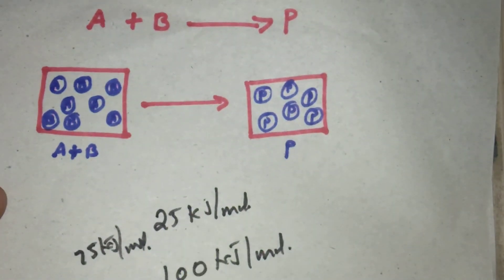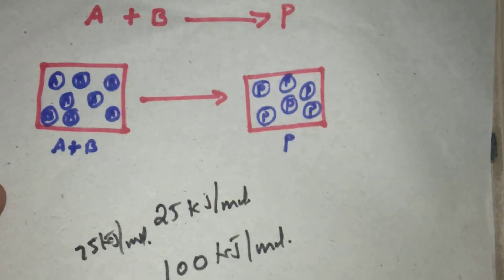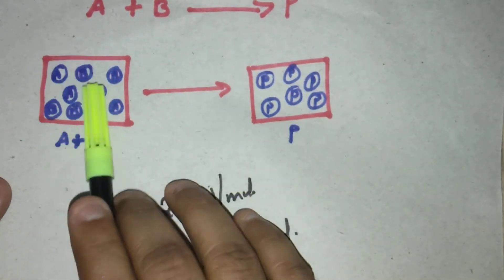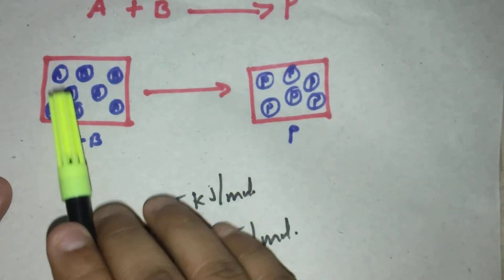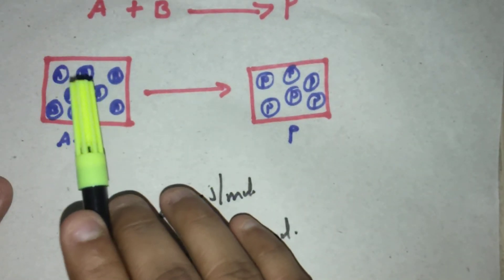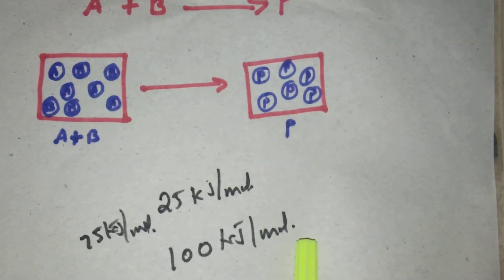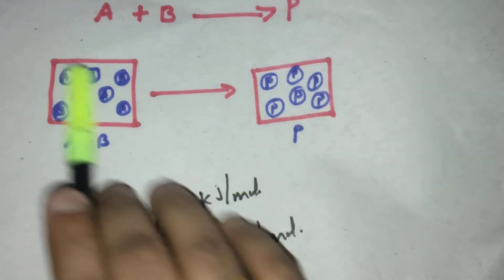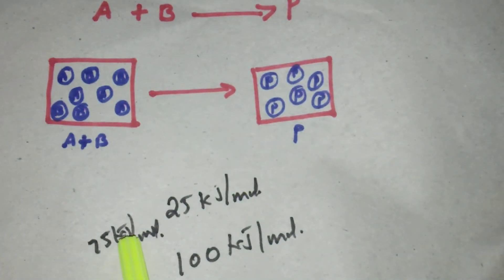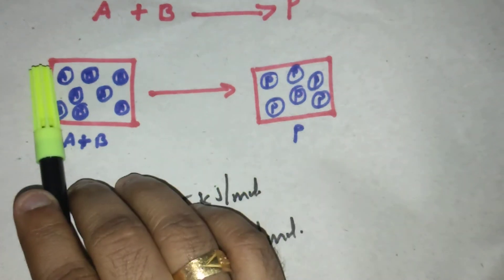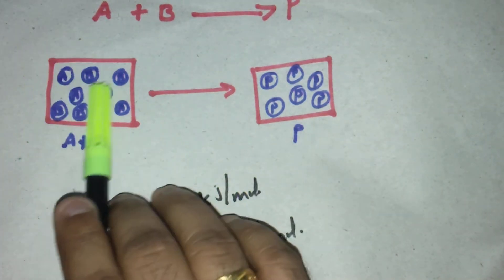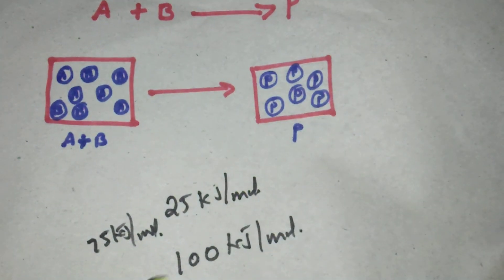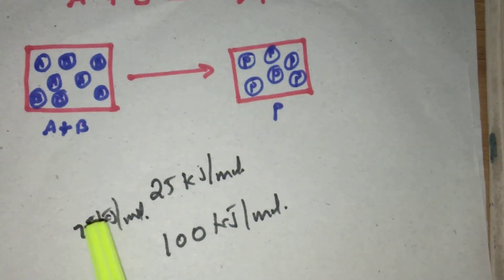Consider the average kinetic energy of a reactant molecule is 25 kilojoule per mole. The minimum energy required for effective collision — for the product to form — is 100 kilojoule per mole. For that, the reactant molecule will absorb 75 kilojoule per mole of energy in the form of heat, light, radiation, etc. This 75 kilojoule per mole is the activation energy, 100 kilojoule per mole is the threshold energy, and 25 kilojoule per mole is the average kinetic energy.